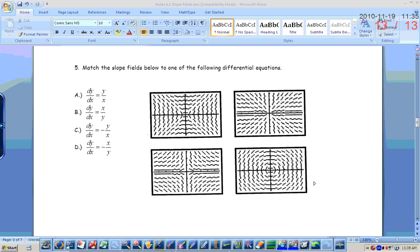Alright, personally, I start to look for where the slopes are zero, or undefined, or maybe where the slopes are one. So for dy/dx equals y over x, where will I have a zero slope? Okay, when y is zero, I'm going to have a zero slope. What's going to happen when x is zero? Good, I'm going to have an undefined slope.